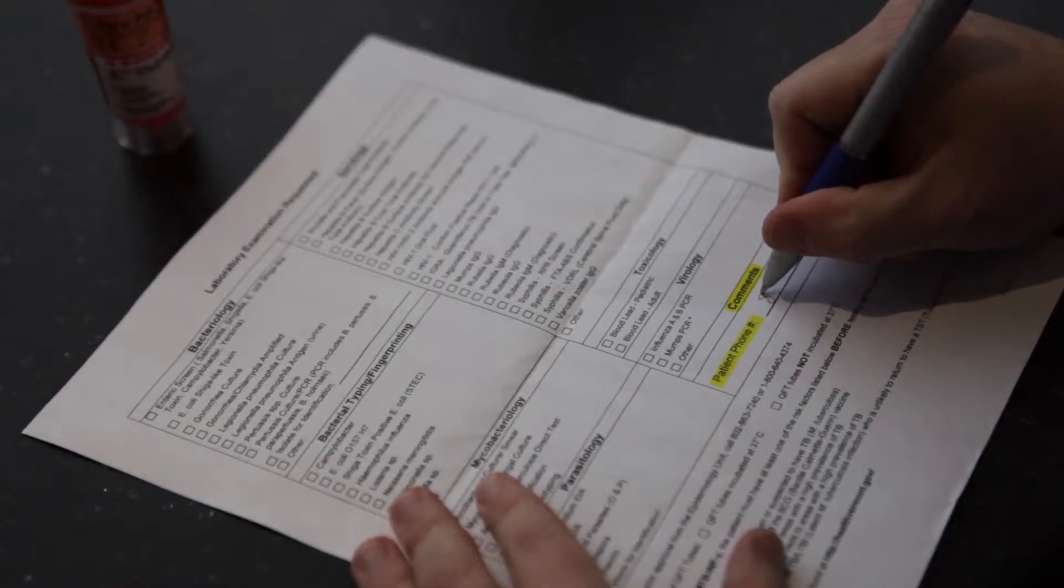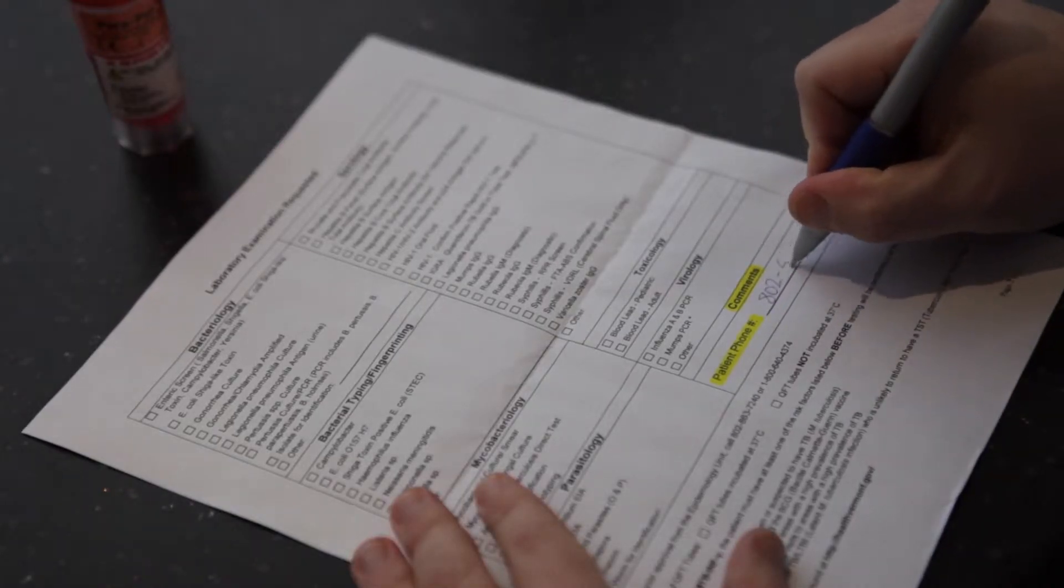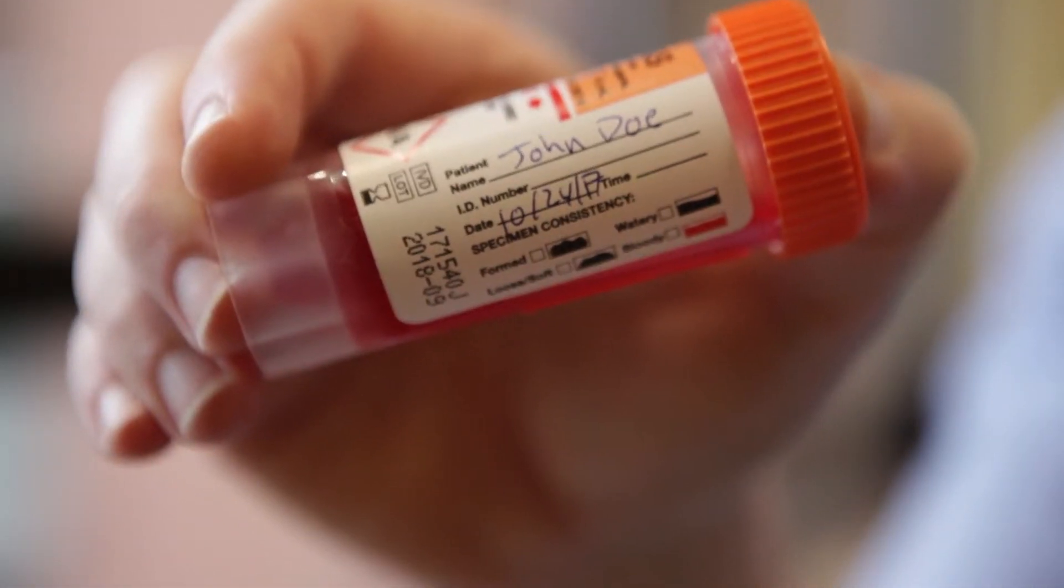First, complete the highlighted sections of the form. Be sure to write your phone number on the bottom of page two. Then print your name and the date you're collecting the sample on the outside of the vial.